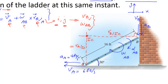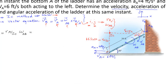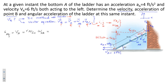R_A/IC is easy to find using geometry. This angle is also 30 degrees and we know the length of AB, so R_A/IC equals 16 feet times sine 30. Therefore omega_AB equals 6 divided by (16 × sine 30), which equals 0.75 radians per second. So I have found omega_AB.